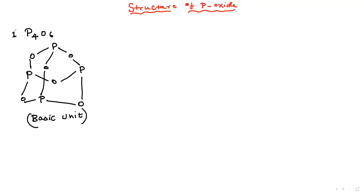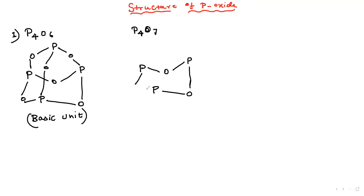The second structure is P4O7. In case of P4O7, we start with the basic unit P4O6 — four phosphorus and six oxygen — then we add one more oxygen. What happens? We make one P=O double bond on one phosphorus. This gives the structure of P4O7.